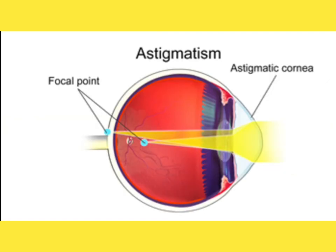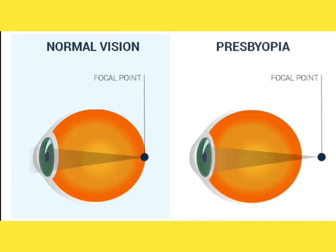Astigmatism is due to the irregular curvature of the cornea. The cornea has two curvatures — horizontal and vertical. If the vertical corneal curvature becomes steeper than the horizontal, it leads to irregular focusing of light in two meridians, creating multiple focusing points. This requires a sphero-cylindrical lens combination to correct. The focusing points can both be in front of the retina, both behind the retina, or one in front and one behind — and depending on this, the correct corrective lenses are chosen to correct this refractive error.